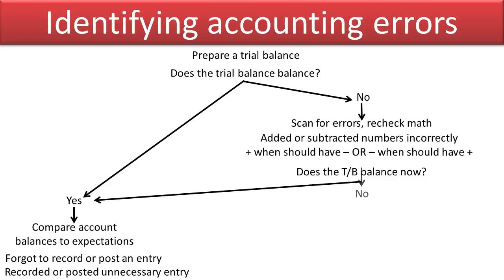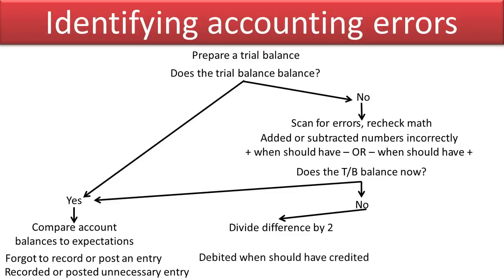If the answer is no, we have a few other things you can do. For example, divide the difference at the bottom of the trial balance by 2 — that's the out-of-balance number. Dividing by 2 may help you discover that you debited when you should have credited, or credited when you should have debited.